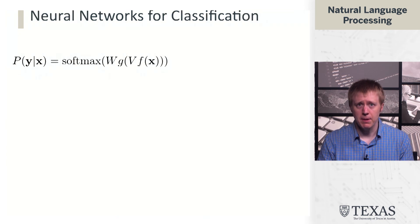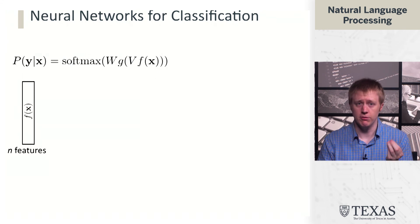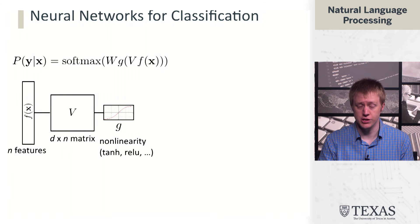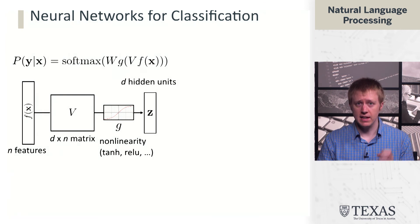To map out exactly what's going on here and think about it graphically, we start with our n features in f(x). We multiply those by V, which is a d by n matrix, and put that through our nonlinearity g.